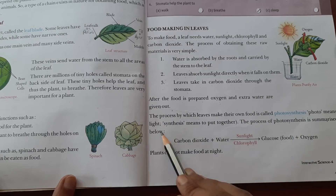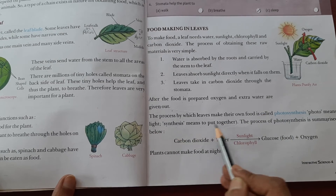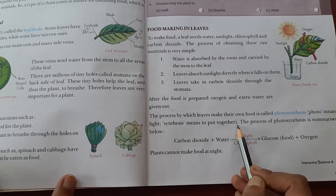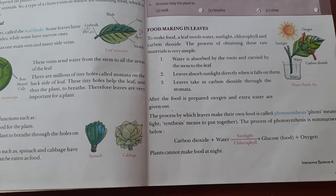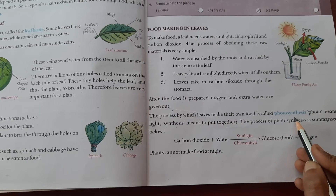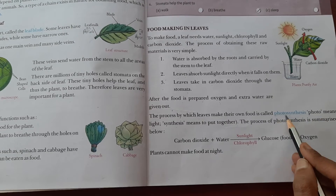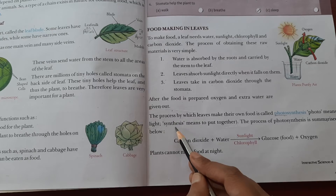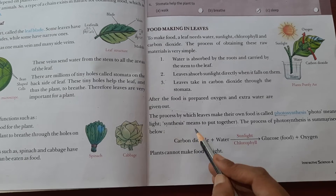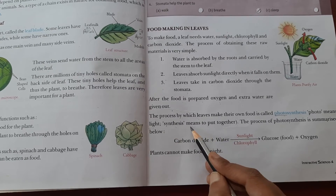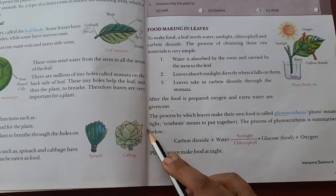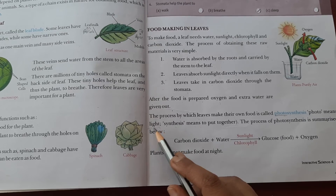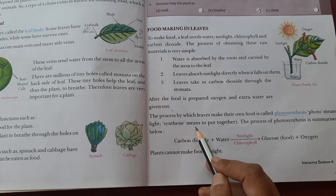Photos means light, and synthesis means to put together. So photosynthesis means using light from the sun to put together the raw materials — water, carbon dioxide, and chlorophyll — in the leaves to make food.